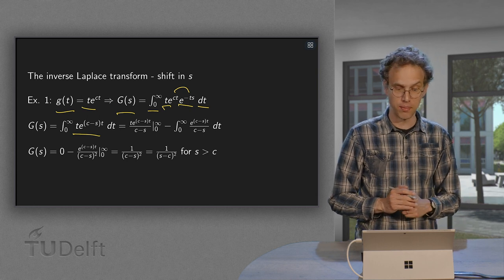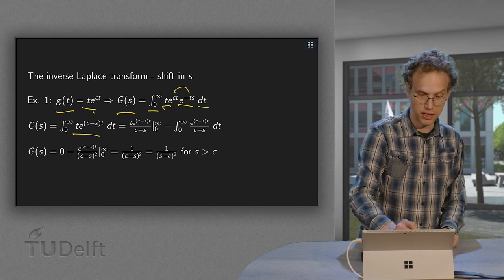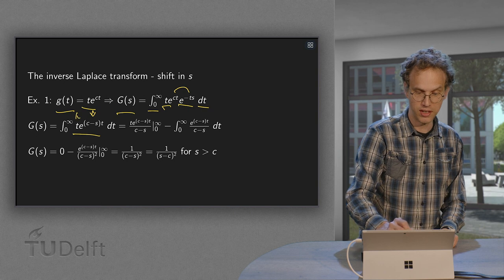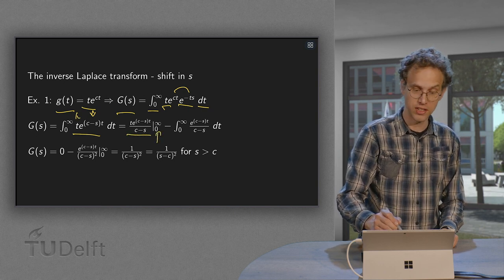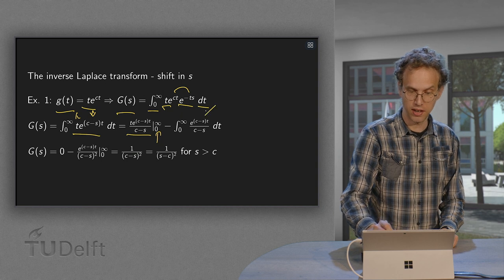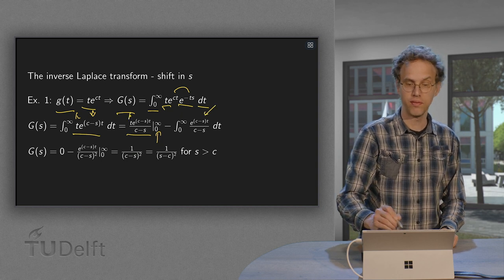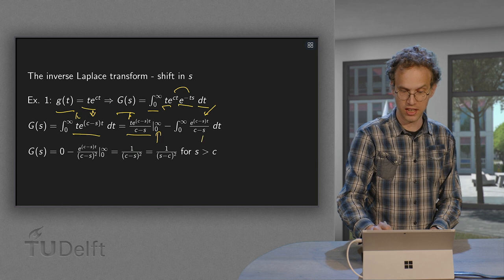Now we integrate by parts. Integrate the exponential and leave the t, so that's this part between the boundaries, minus the antiderivative times the derivative of t, which is 1, so minus the second integral over here.